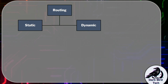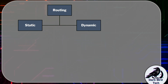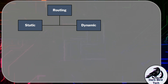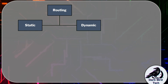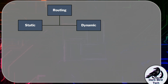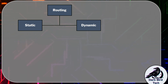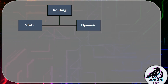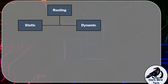With dynamic routing, we're going to be able to go to the router, configure a routing protocol, and tell that routing protocol on that router which networks it needs to tell other routers about. And then the routes are sorted out amongst themselves about the routes and how to get there.